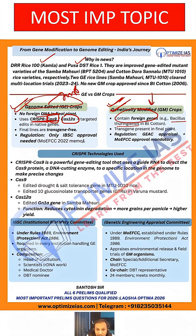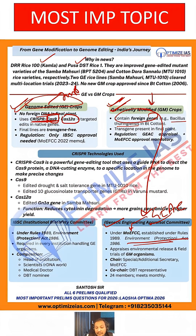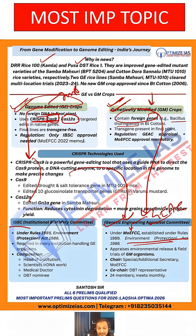Genetically modified crops need approval from the Genetic Engineering Appraisal Committee (GEAC), which operates under the Environment Protection Act under the Ministry of Environment and Climate Change. Whereas gene-edited crops do not need GEAC approval — they need approval from the Institutional Biosafety Committee (IBSC), which is under the Department of Biotechnology.